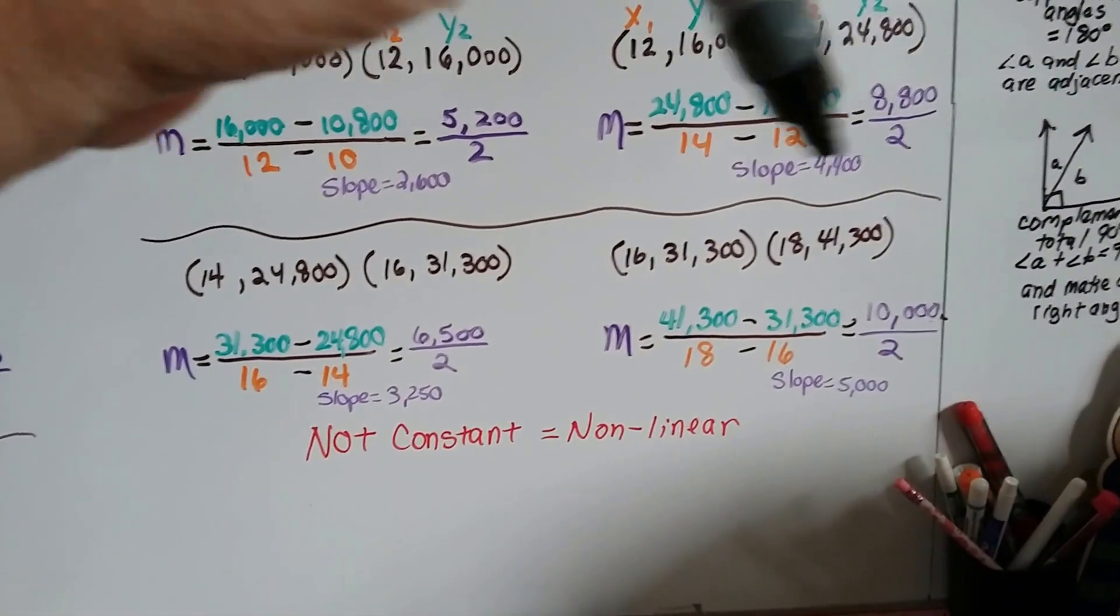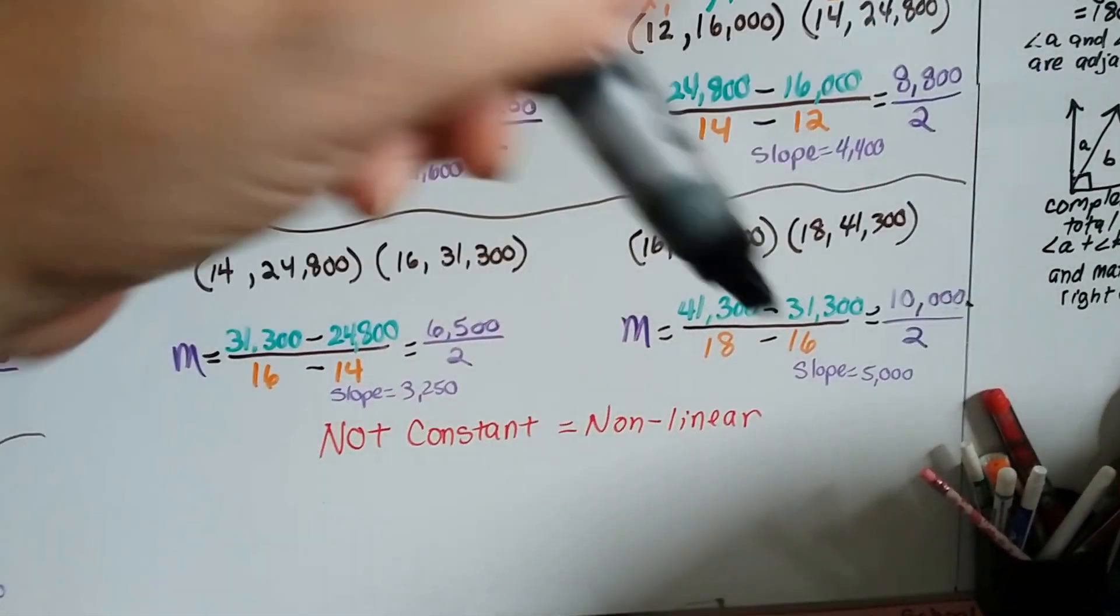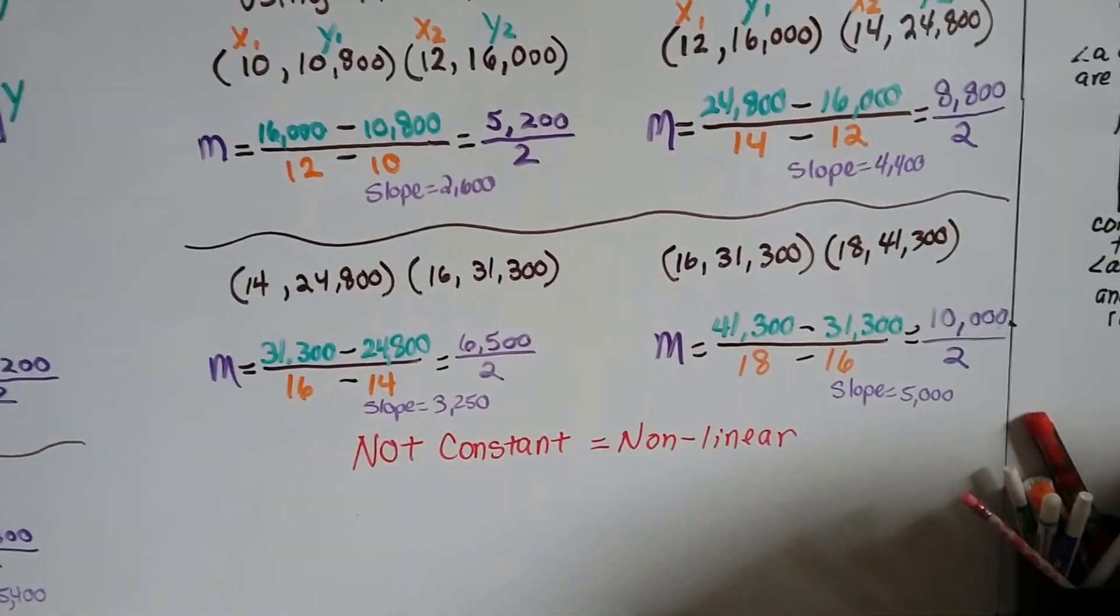Looking at these slopes, $2,600, $4,400, $3,250, and $5,000, these are not constant. These are non-linear.